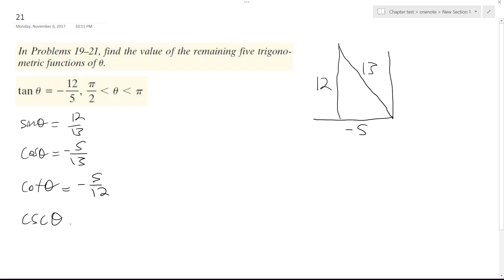Cosecant theta, which is 1 over the sine, so that's going to be 13 over 12.